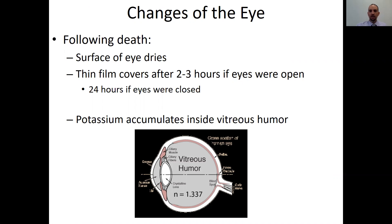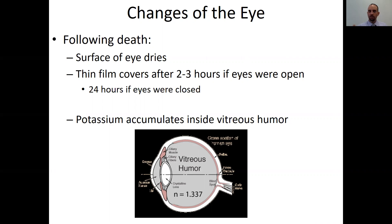The last indicator is changes to the eye. Following death, the surface of the eye dries over and a thin film covers it within two to three hours if the eyes were open. If the eyes were closed at death, that film takes approximately 18 to 24 hours to show. So if we don't see that film, we know the body was recently killed; if we do see it, it's been at least two to three hours.